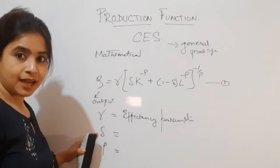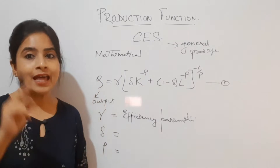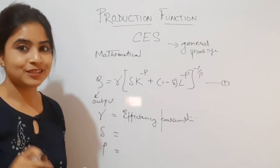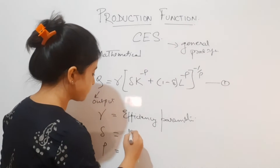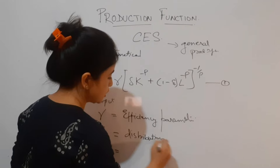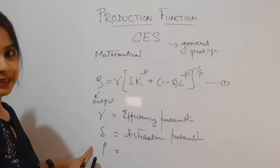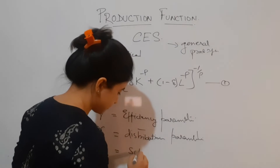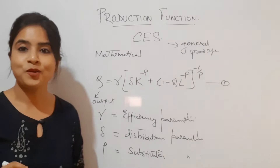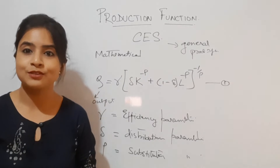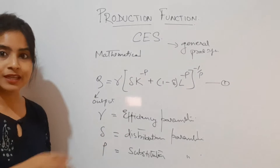I would like you to give it a try — what are delta and rho? Pause the video, give it a shot, then play it again and check whether you are correct. This is just a trick to revise yourself. So, delta represents the distribution parameter, and rho represents the substitution parameter. I hope you've identified what you need to go over again — and kudos to all who guessed correctly.